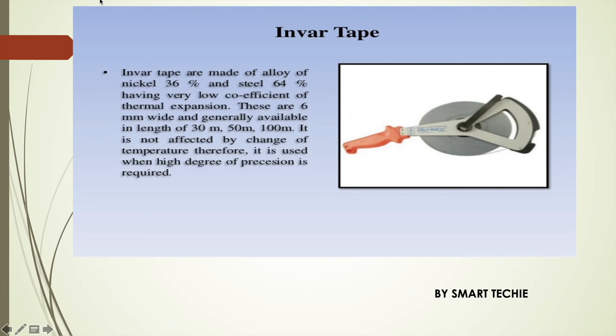Invar tape are used mainly for linear measurements of a very high degree of precision. The Invar tape is made up of alloy of nickel and steel and has very low coefficient of thermal expansion.